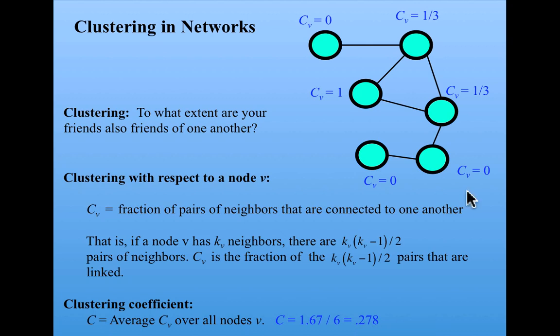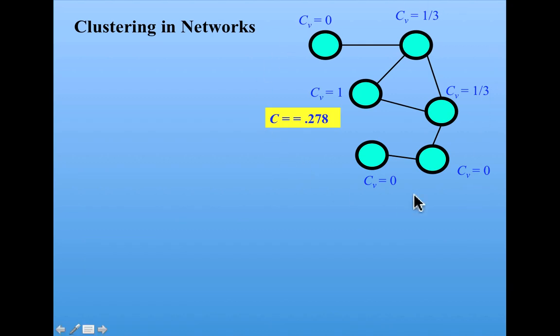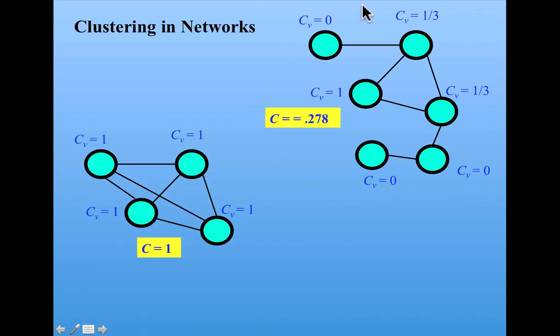Now we can contrast a network like this one with a network like this, that's completely connected. That is, every node is connected to every other node. So everybody's friends are also friends with each other. And with that, you get a clustering coefficient of 1.